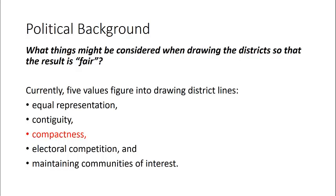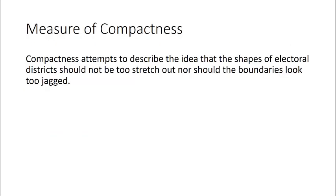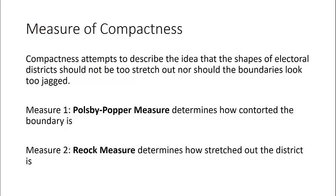The focus of this video will be on compactness. So 23 states require that districts are compact, and definitions of compactness vary by state, but basically it means that the shapes of electoral districts shouldn't be too stretched out and boundaries shouldn't be too jagged. We will use two different measures to look at this idea. The first measure is called the Polsby-Popper measure, which determines how contorted the boundary is. The second measure is called the REOCK measure, which determines how stretched out the district is.